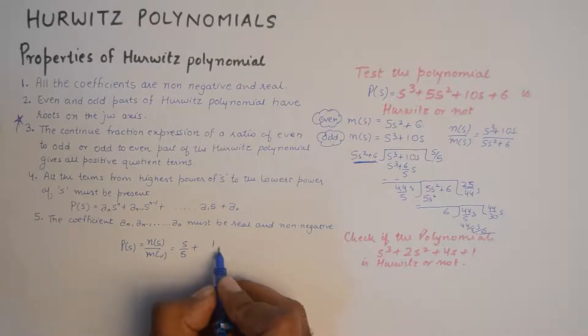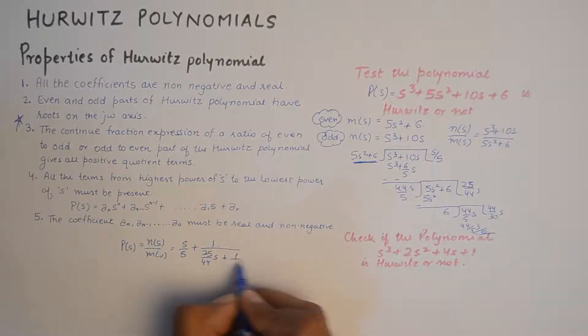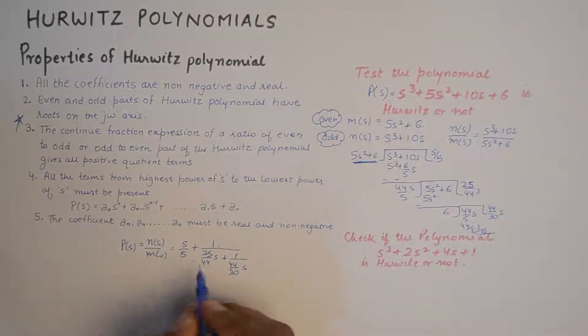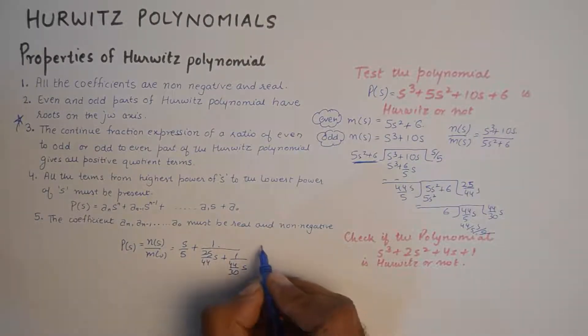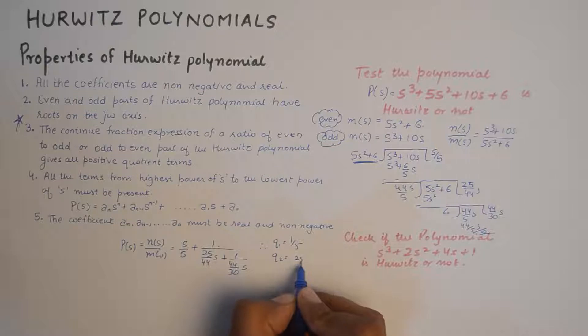Plus 1 upon 25 on 44s, which is the second quotient, plus 1 upon 44 by 30s, which is the third quotient. This is the way you can express it mathematically, but you need to see the quotients. Q1 is 1 by 5, Q2 is 25 by 44. The coefficients of all the quotients are coming out to be positive.